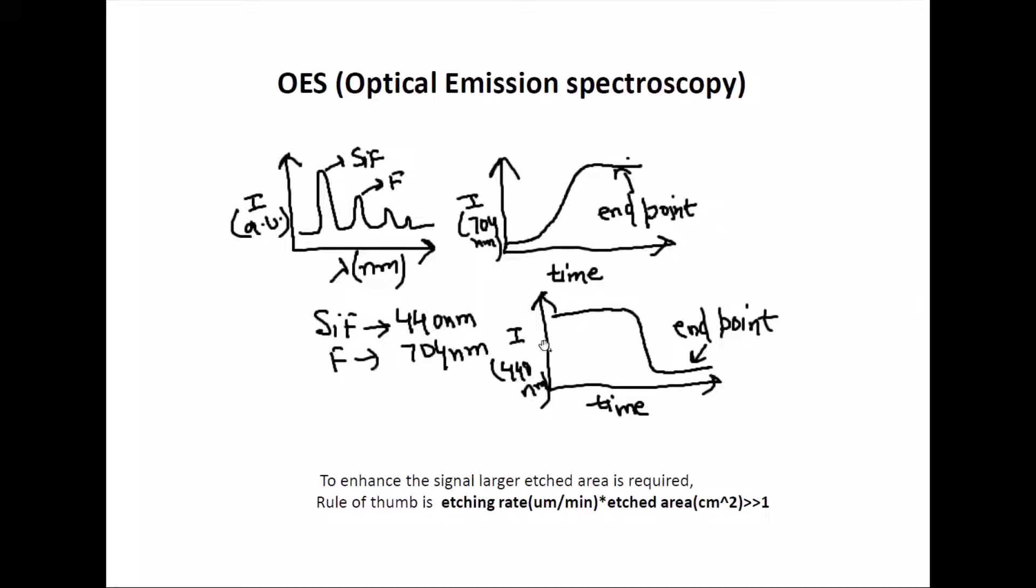On the other hand, you can also observe the peak of 440 nanometers which is silicon fluoride. Initially you'll have a lot of silicon fluoride formation, but after some time it will decrease. At some point you'll no longer have silicon fluoride radicals and that will be your endpoint.